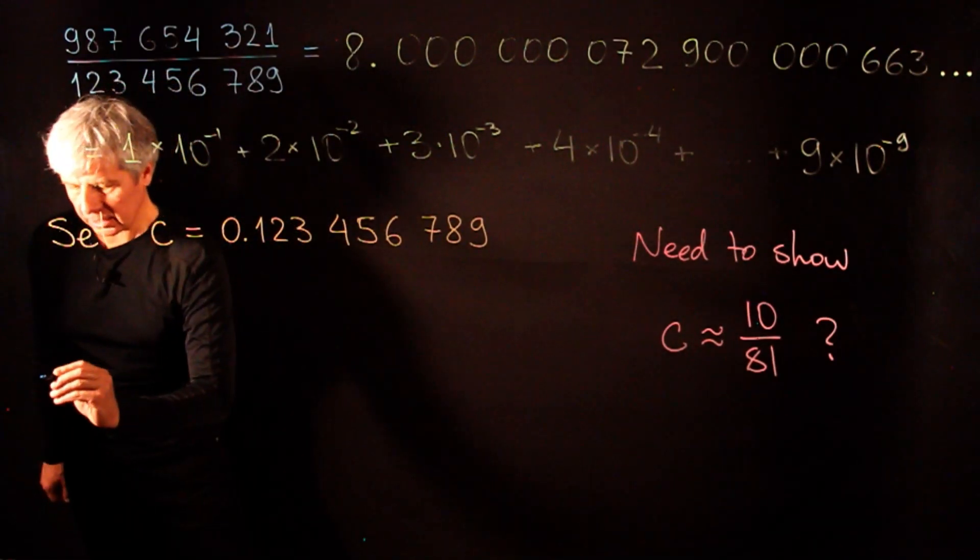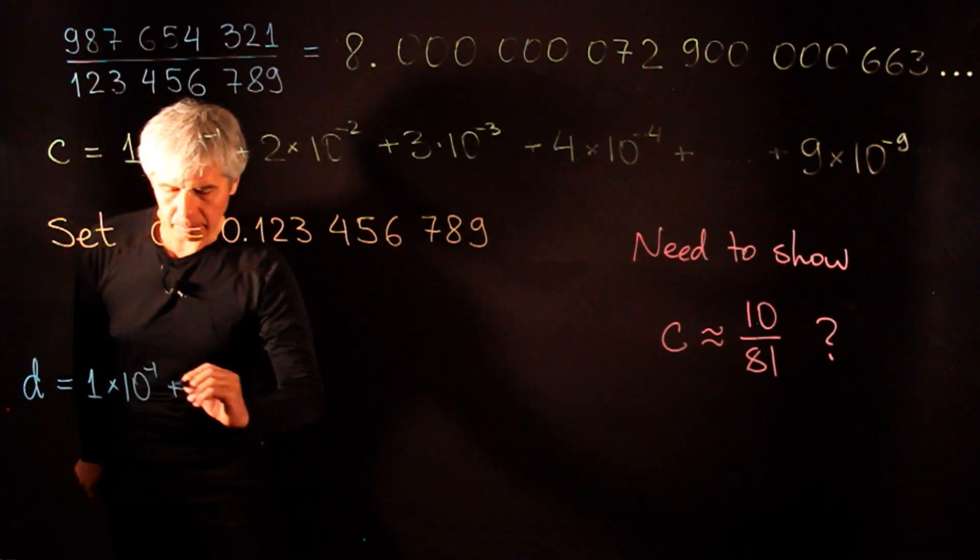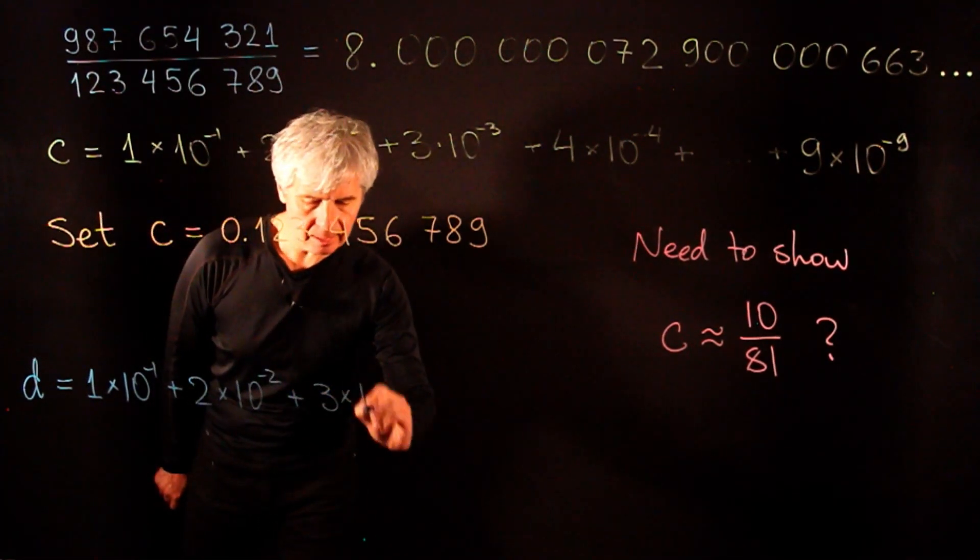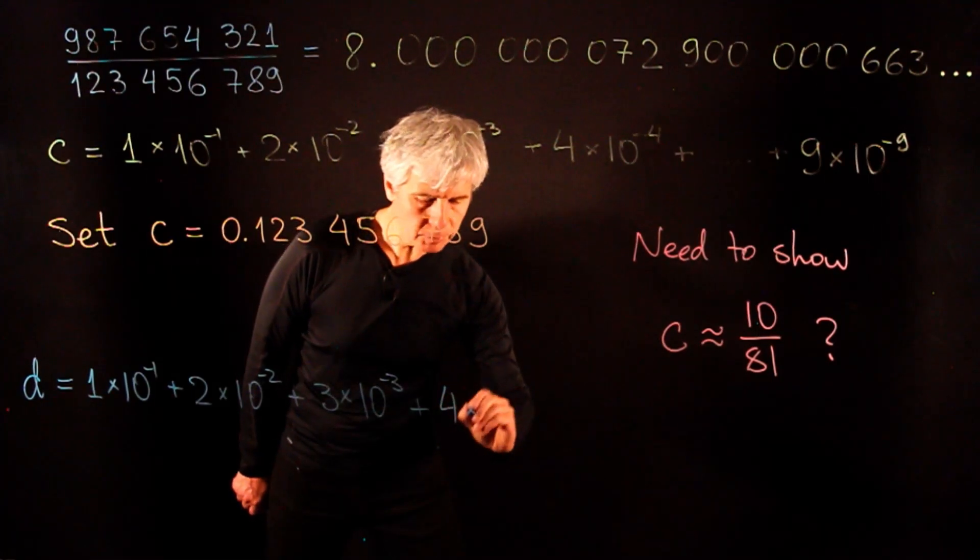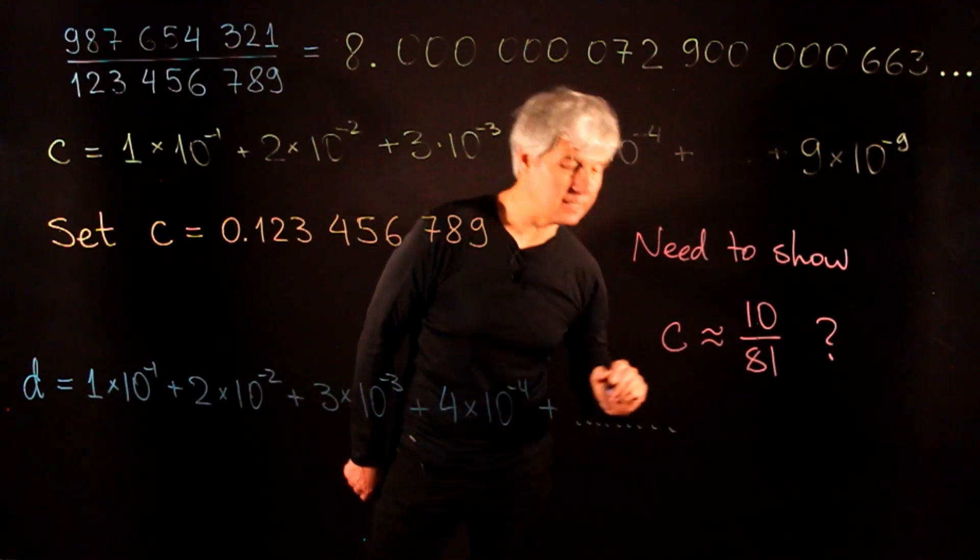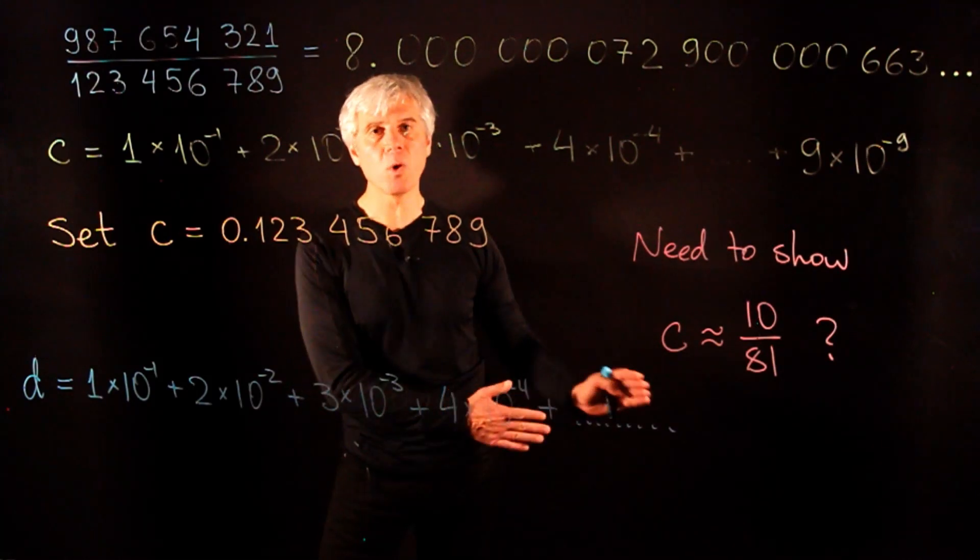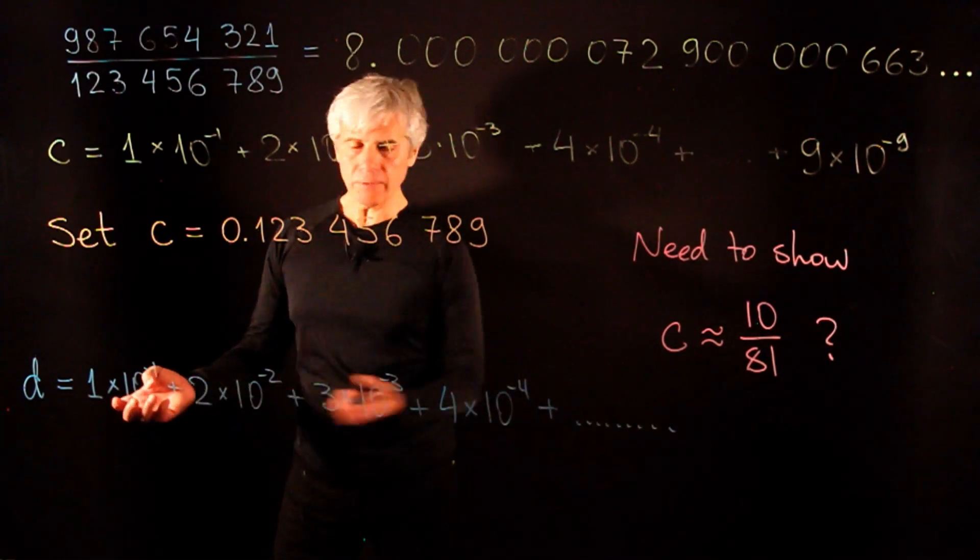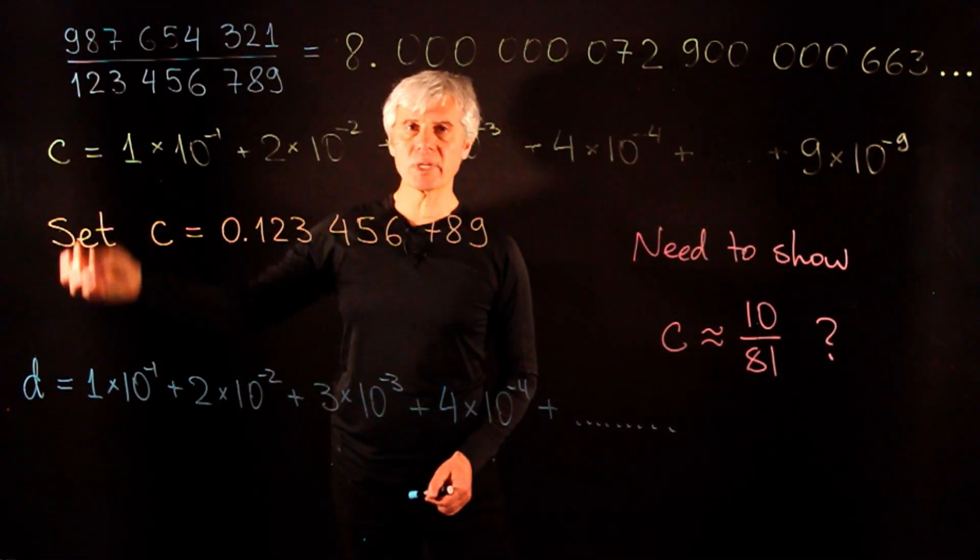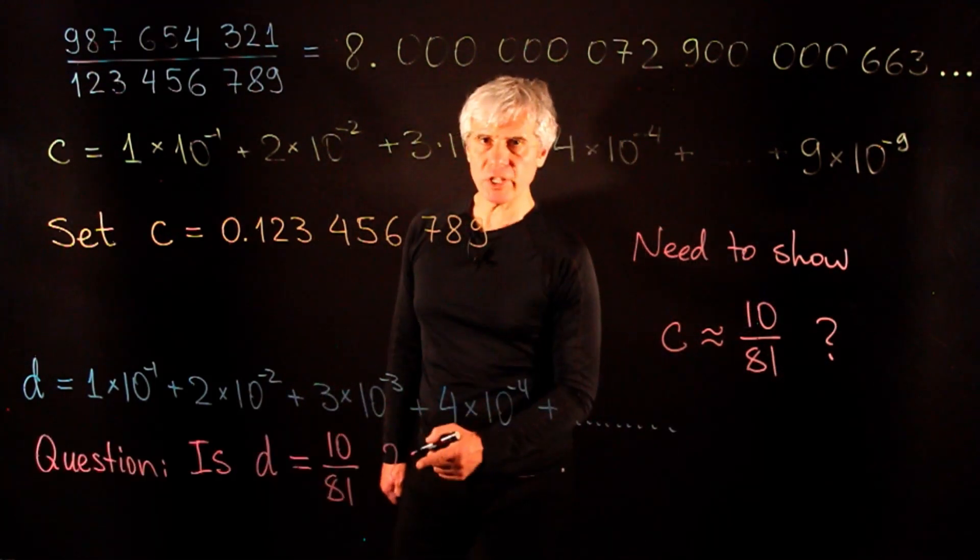I have an idea. Let's call the new number d and let it be 1 times 10 to the negative 1 plus 2 times 10 to the negative 2 plus 3 times 10 to the negative 3. And then instead of stopping at 9, let us go all the way to infinity. So number d is a sum of infinitely many summands that are getting smaller and smaller. Calculus tells us that such infinite sums may converge to a finite answer. We point out that numbers c and d are very close to each other because the difference is composed of very small terms.